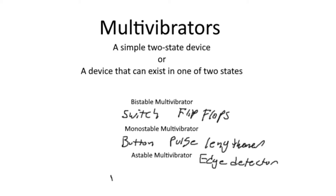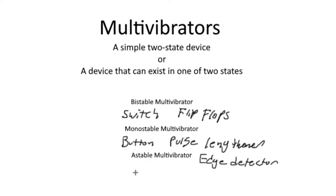If we have an astable multivibrator in the low state, because both states are not stable, it's an unstable state and it's going to try to get out. So it transitions to the high state — but the high state is also unstable, so it wants to get out of that as quickly as possible and transitions back to the low state. Effectively, all this is is a circuit that oscillates back and forth between the low state and the high state.